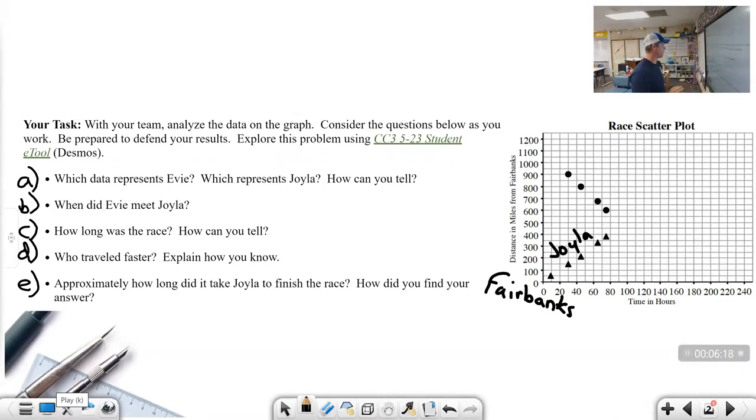To answer question letter A, which data represents Evie? The circles represent Evie. The triangles represent Joila. How can I tell? I know Joila is the triangles because the origin, that's zero comma zero, is Fairbanks. Joila is leaving Fairbanks in the competition. You can also write that Joila has five checkpoints, there are five triangles. That is how I know. Evie, circles. Joila, triangles.